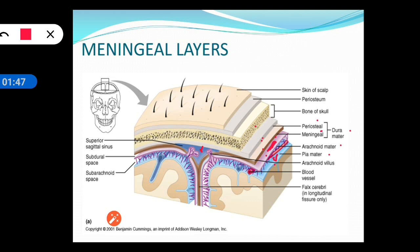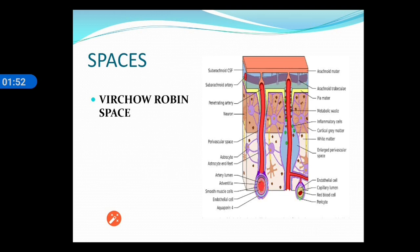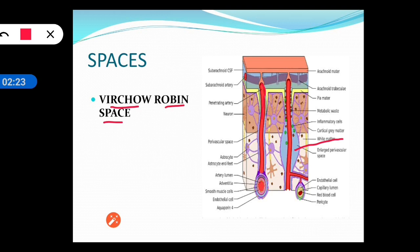We have already seen two spaces: the subdural and subarachnoid. Now we will see one more space called the Virchow-Robin space. As an artery enters and passes through the substance of the brain, it carries along with it a tubular prolongation called the perivascular space. As the artery enters through the substance of the brain, it pulls along the arachnoid mater and the pia mater along with the subarachnoid space.